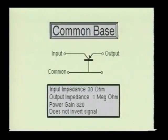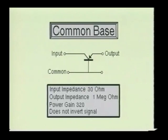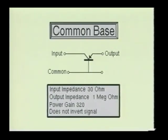The common base circuit, on the other hand, will have a typical voltage gain of 327 and a current gain of less than 1, giving the common base a power gain of approximately 320. The input impedance of this circuit is about 30 ohms, and the output impedance will be about 1 megaohm. The common base is normally used for very high-frequency voltage amplification situations.